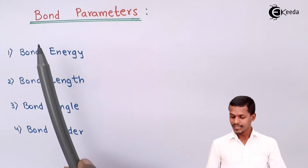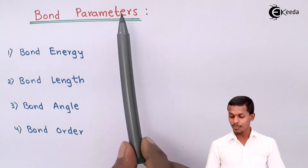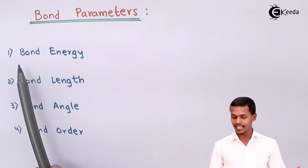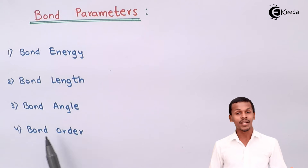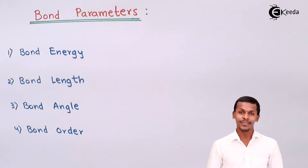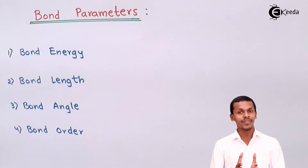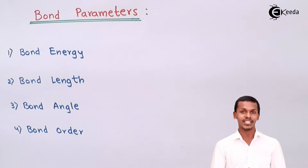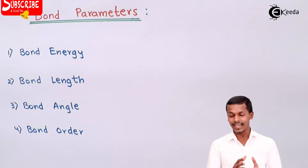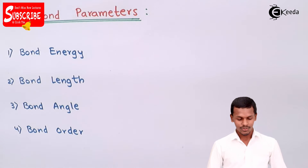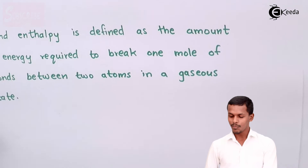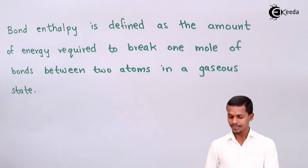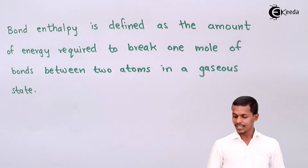The bond parameters we are going to talk about are bond energy, bond length, bond angle, and bond order. Let us understand each one by one with the help of examples. The first parameter is bond enthalpy, or bond energy.